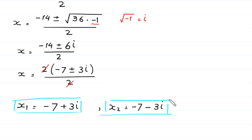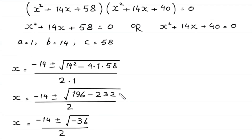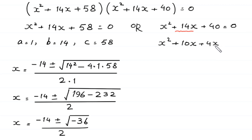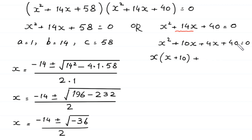Now, to find the other two values of x, we solve the second quadratic equation: x squared plus 14x plus 40 equals 0. This is factorable, so we solve by factorization. We split plus 14x as plus 10x plus 4x, giving x squared plus 10x plus 4x plus 40 equals 0. From the first two terms we factor out x, giving x times x plus 10, plus from the last two terms we factor out 4, giving 4 times x plus 10, equals 0.